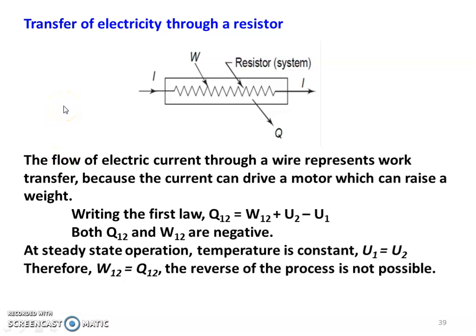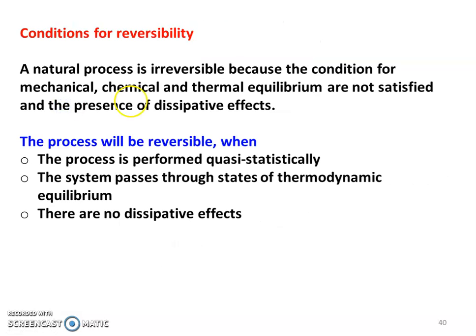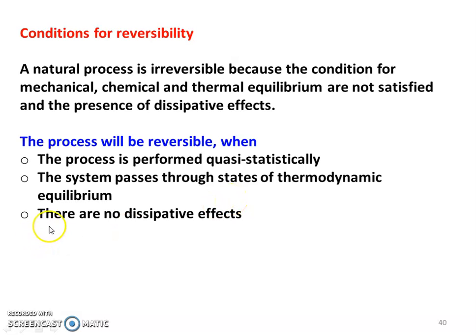These are all the reasons for the irreversibility of the process. Now, what are the conditions for a reversible process? A natural process is irreversible because the conditions for mechanical, chemical, and thermal equilibrium are not satisfied and there is a presence of dissipative effects. The process will be reversible when the process is performed quasi-statically — very, very slowly — so that the system passes through a state of thermodynamic equilibrium, and there is no dissipative effect. When both conditions are satisfied, the process is reversible. None of the practical processes is reversible; all natural processes are irreversible.